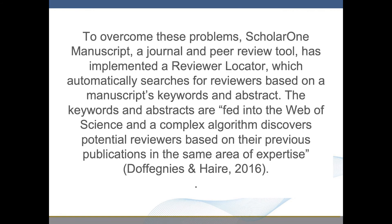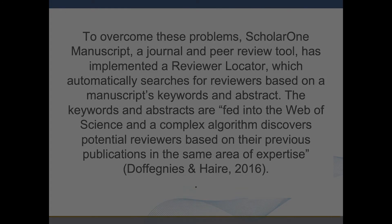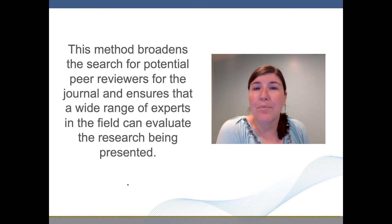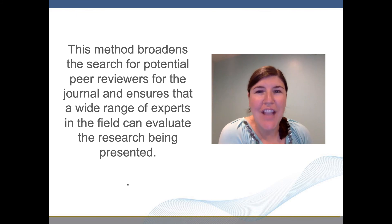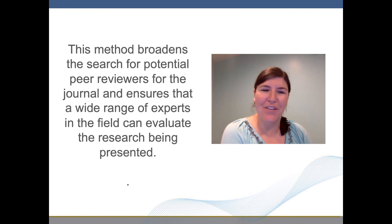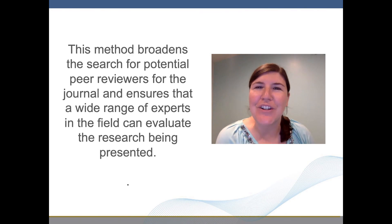To overcome these problems, Scholar One Manuscript, a journal and peer review tool, has implemented a reviewer locator, which automatically searches for reviewers based on a manuscript's keywords and abstract. The keywords and abstracts are fed into the Web of Science and complex algorithms discover potential reviewers based on their previous publications in the same area of expertise. This method broadens the search for potential peer reviewers for the journal and ensures that a wide range of experts in the field can evaluate the research being presented.